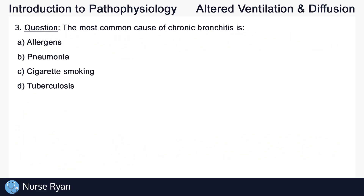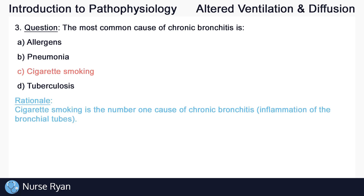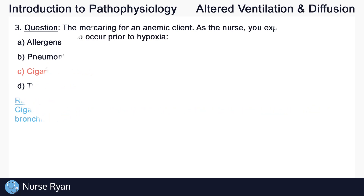Question number three. The most common cause of chronic bronchitis is — this one is C: cigarette smoking. Cigarette smoking is the number one cause of chronic bronchitis, which is the inflammation of the bronchial tubes.